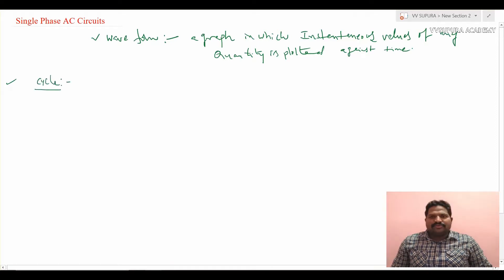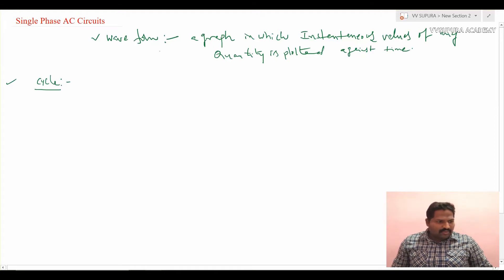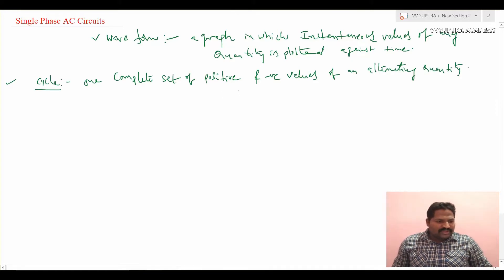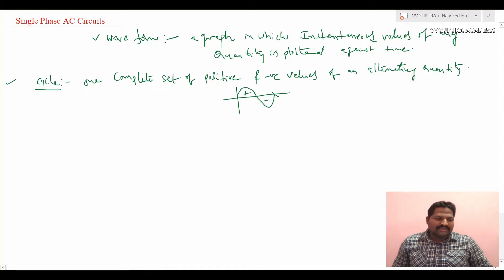Next one is cycle. A cycle is defined as one complete set of positive and negative values of an alternating quantity. So if we take a sinusoidal waveform, it will have positive values and negative values. One complete cycle means starting at zero, going through positive values and negative values, and returning to the same point — that is known as a complete cycle.